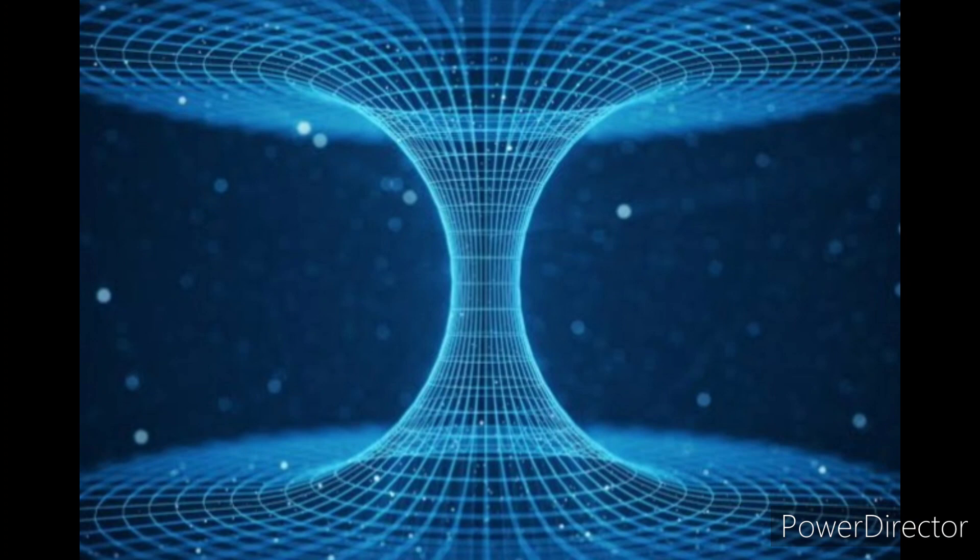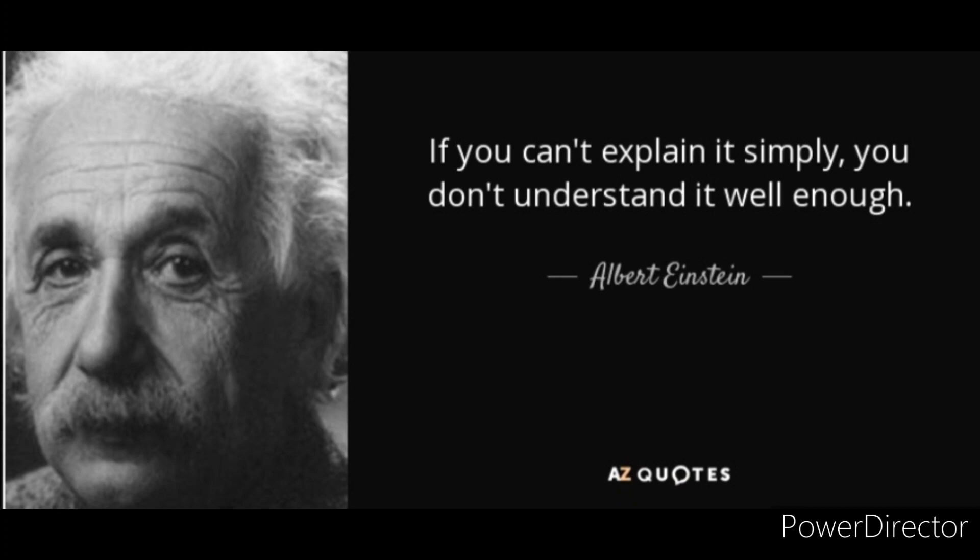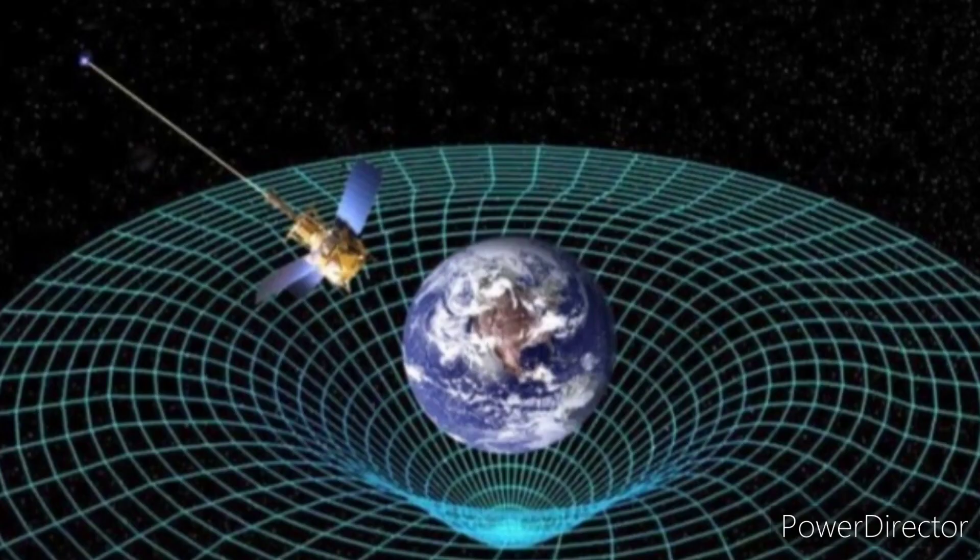Wormholes are hypothetical structures predicted by Einstein's general theory of relativity. Now, this is important for this video. Albert Einstein's theory of relativity is basically a theory of gravity. This theory states that instead of an unknown, invisible force that helps two objects attract to each other, gravity is warping spacetime. In other words, the more massive an object, the more it warps the space around it.